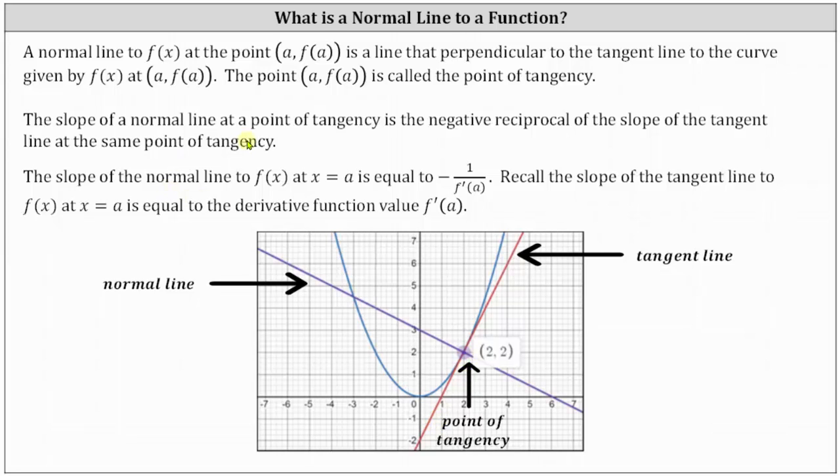The slope of a normal line at a point of tangency is the negative reciprocal of the slope of the tangent line at the same point of tangency.